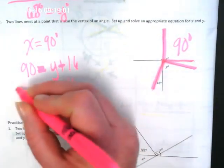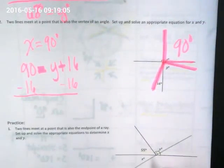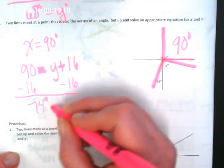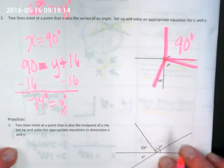Minus 16, minus 16, and what do we get? 74 degrees is equal to angle Y, or Y degrees.